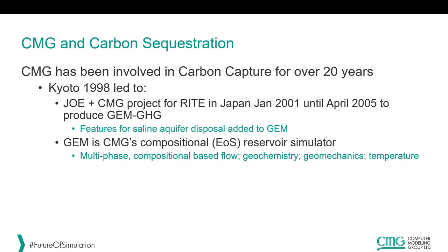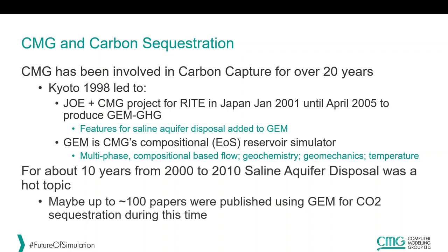That project ran from January 2001 until April 2005 and produced a product we called GEM GHG — GHG standing for greenhouse gas. This was where we added an extensive range of features to our GEM compositional equation-of-state reservoir simulator, including saline aquifer disposal capabilities, multi-phase compositional modeling, full geochemistry, geomechanics, and temperature. For about 10 years from 2000 to 2010, saline aquifer disposal was a hot topic, with over 100 papers published using GEM for this process.